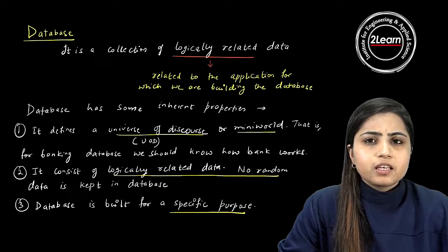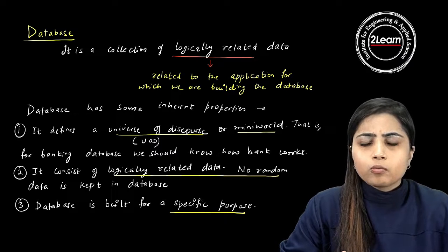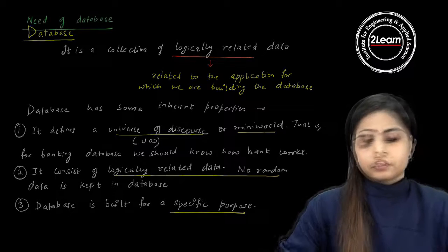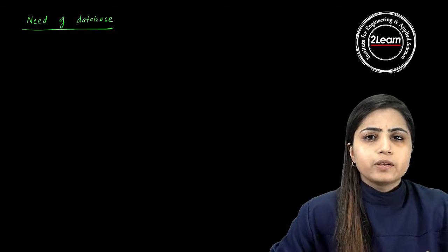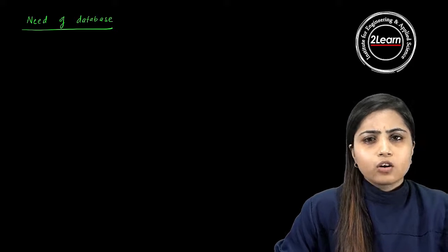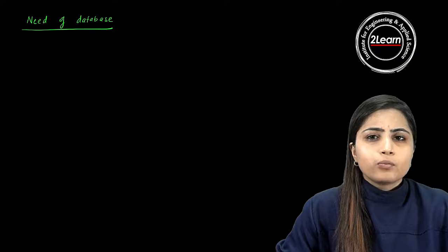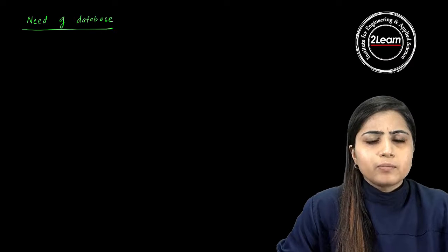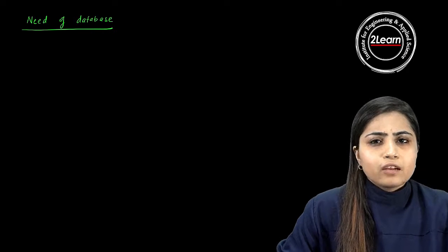Now let's talk about the need for a database by discussing the evolution of databases. First of all, we had data stored in manual files, just like you can see in government departments today. For example, in a government university, student information — names, addresses, phone numbers, parent information — would be written by hand. Different departments like IT, CSE, and the exam department would each maintain their own separate manual files.